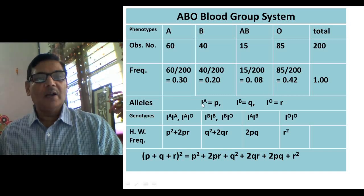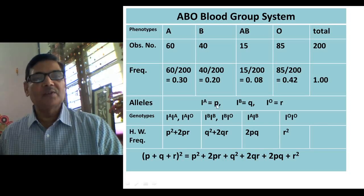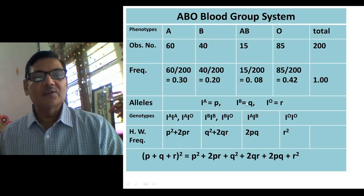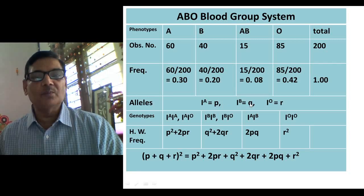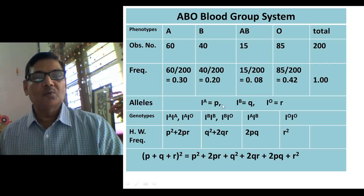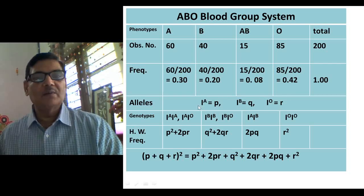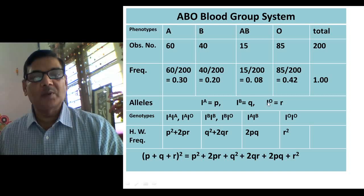Next, we assign symbols: IA is represented by P, IB by Q, and IO by R. So P, Q, and R indicate the frequencies of IA, IB, and IO respectively.